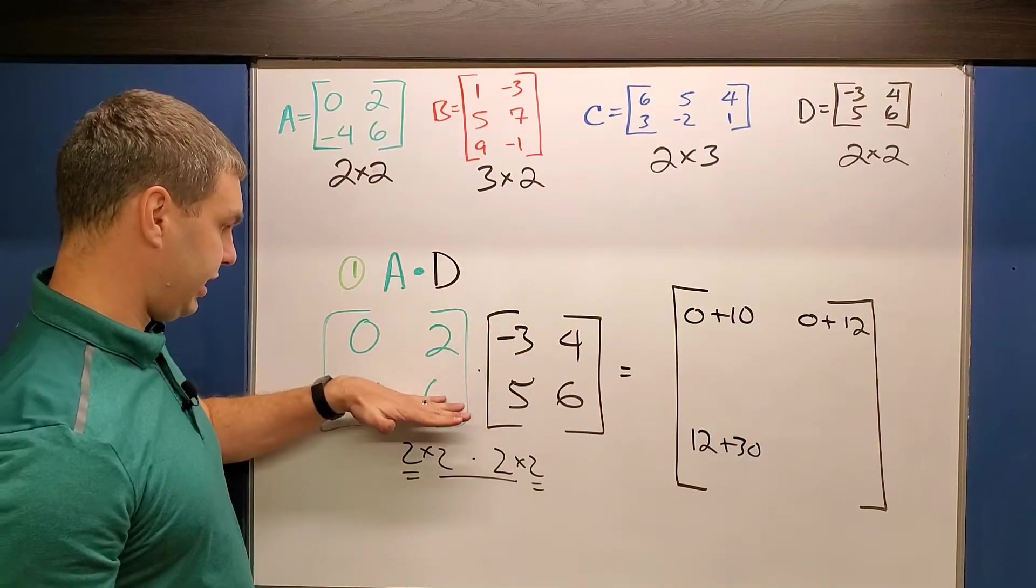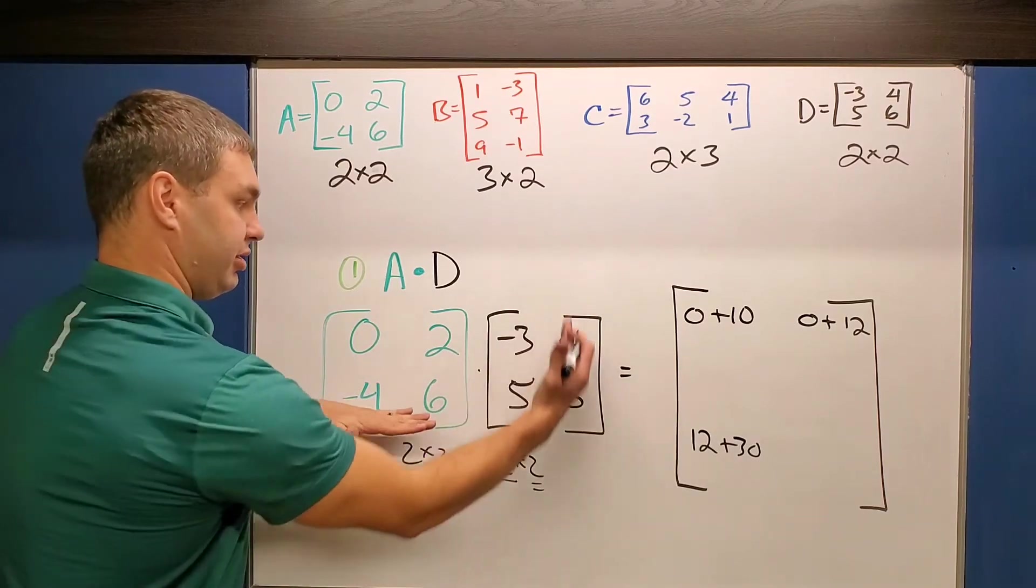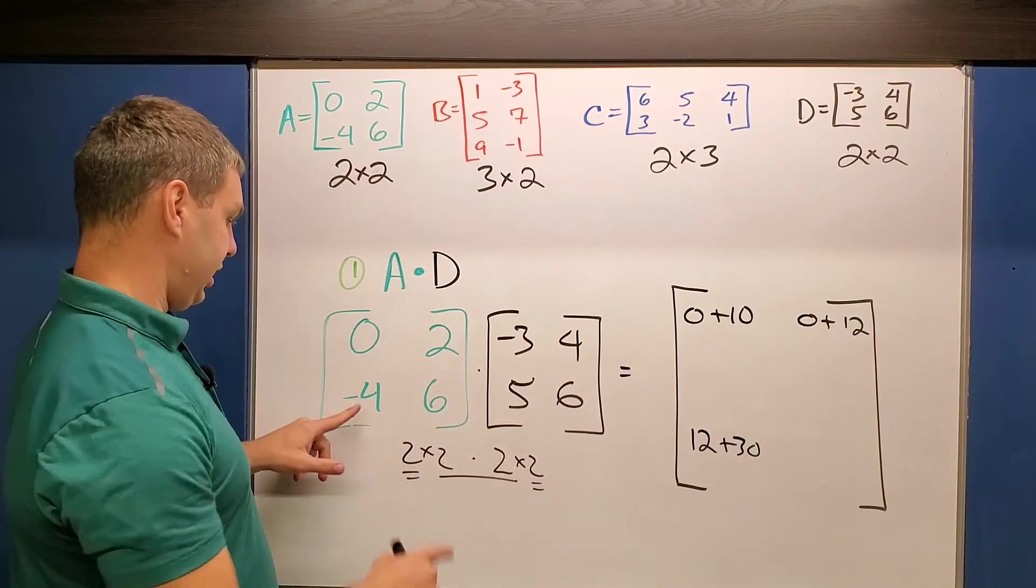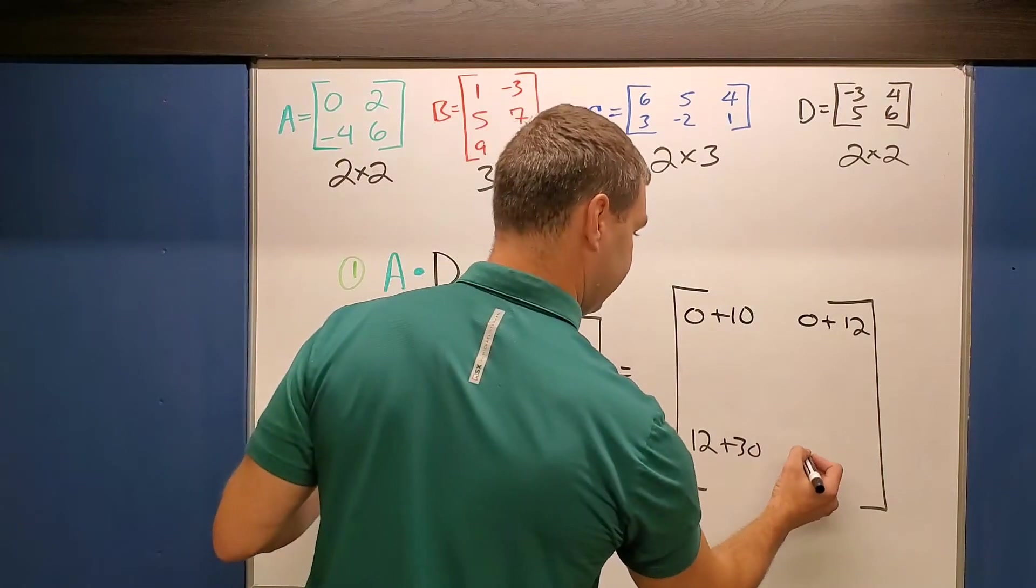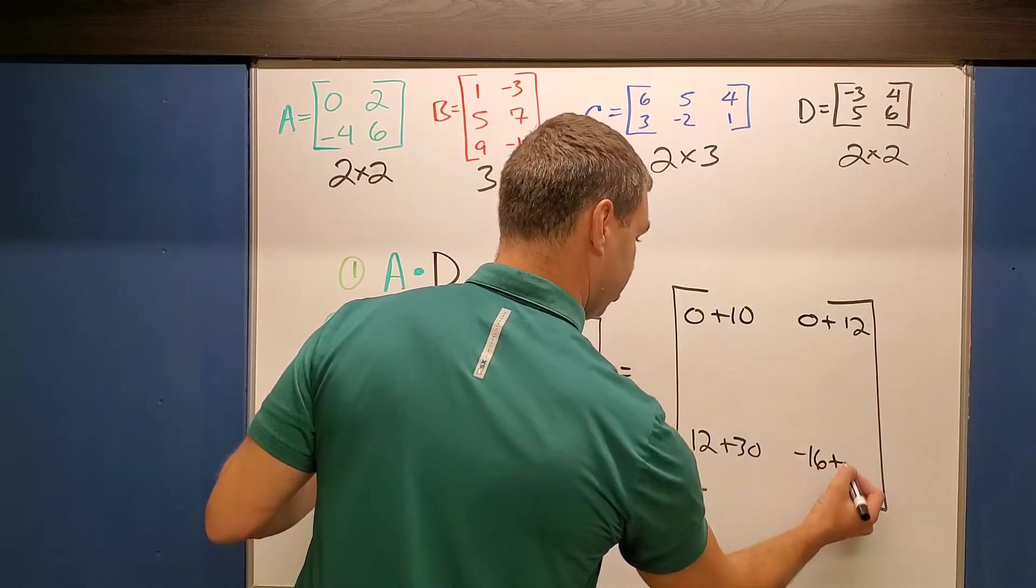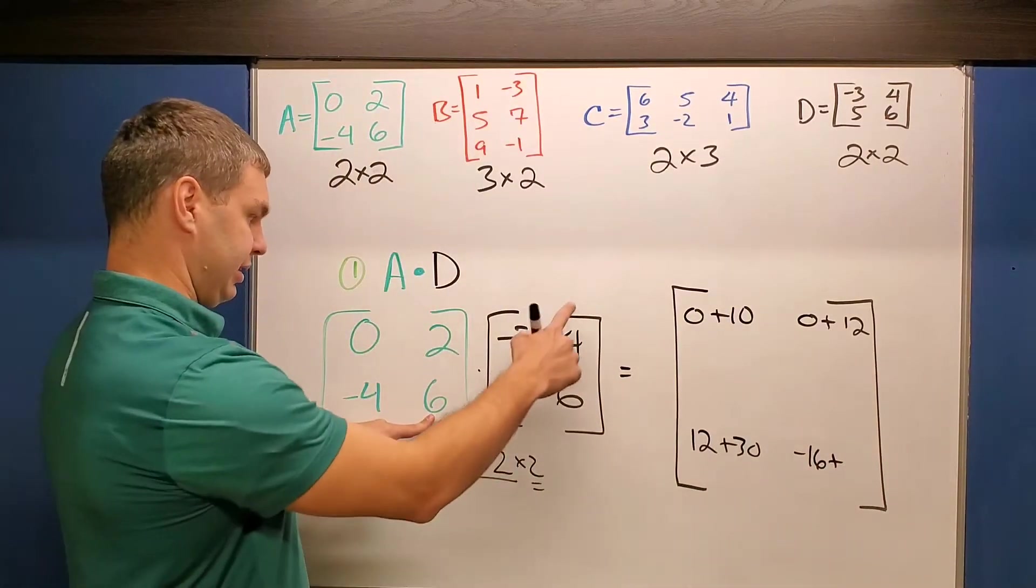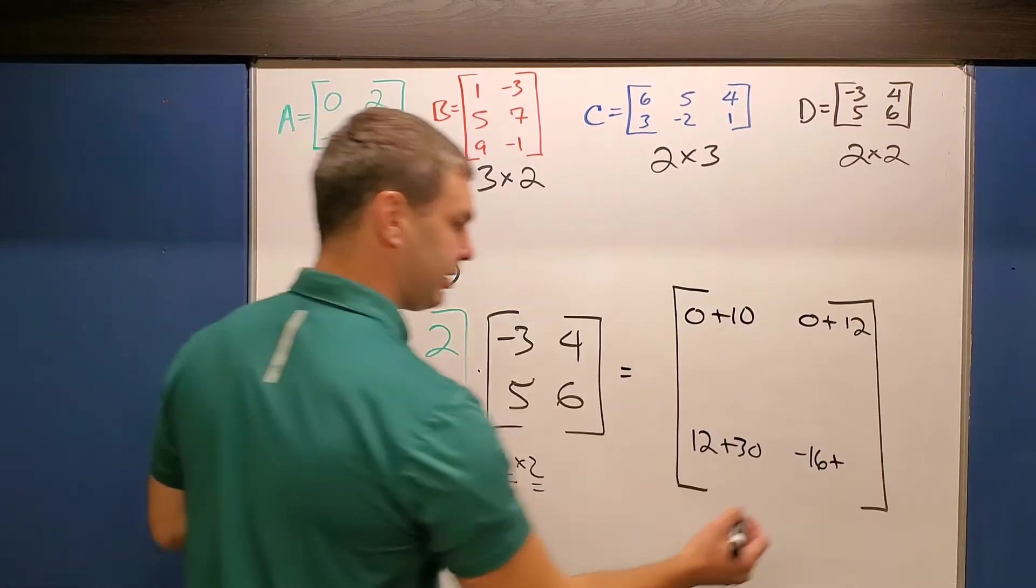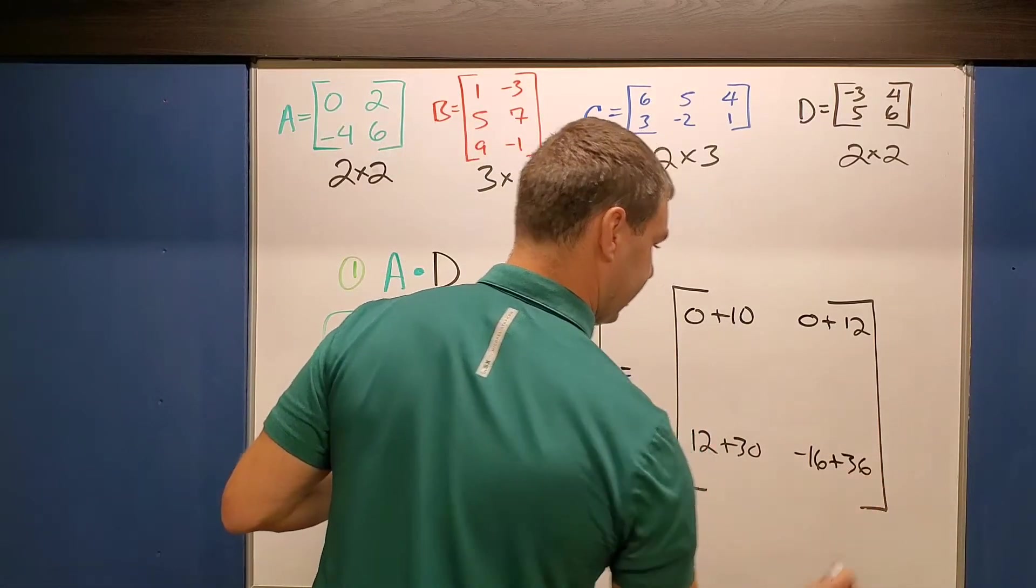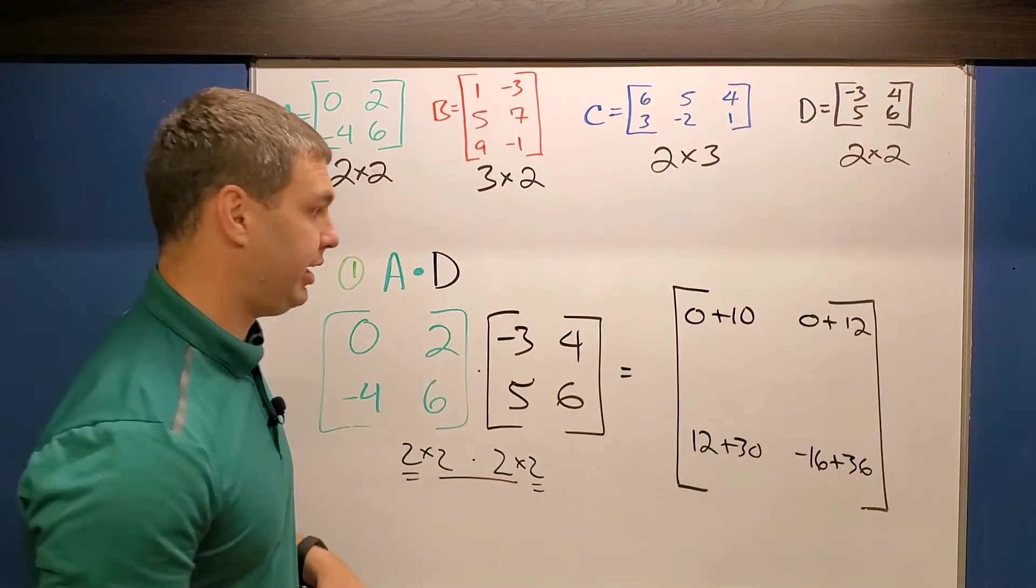And then the last one, we're going to take our second row times our second column. And we're going to do the same thing. -4 times 4 is -16 plus 6 times 6 is 36. And then we just have to simplify that together. And that's going to be our answer.